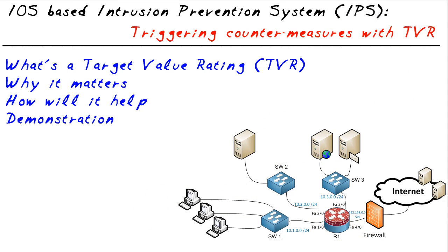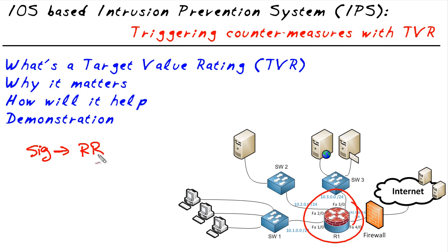Let's say that you and I have been tasked with configuring iOS-based IPS — the ability for the router to identify intrusions, malicious traffic, and stop it. In an IPS system, one way of doing that is by doing signature matching. Every time there's a signature match — for example, malicious traffic like a port scan or ping sweep — when there's a signature match, it's going to create something called a risk rating.